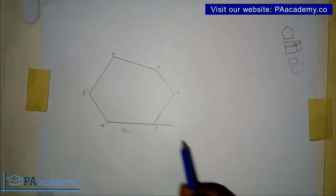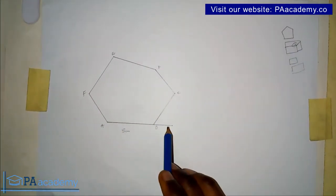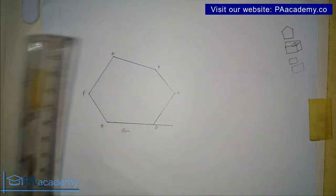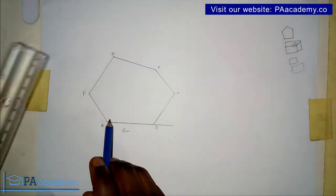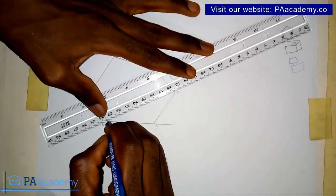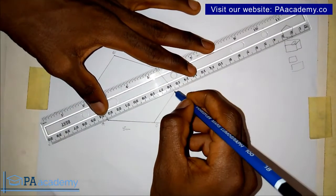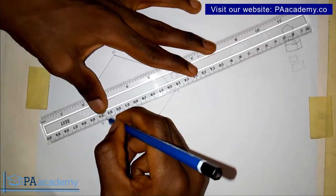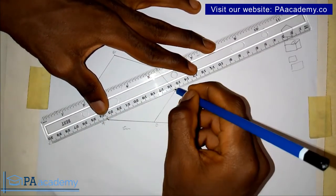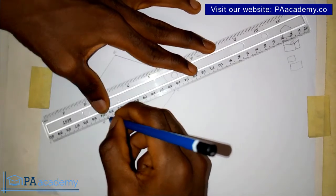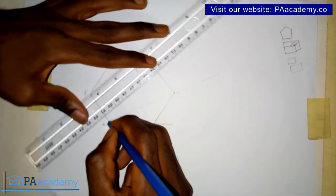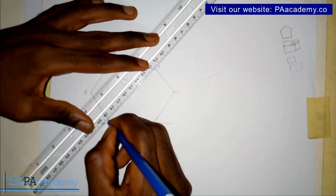Having extended line AB to seven centimeters, that extension should be reflected on all the other sides. To do that, from point A you draw a line that passes through point C, then draw another line that passes through point D.